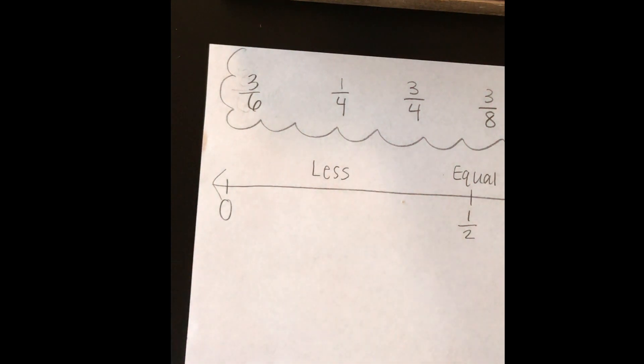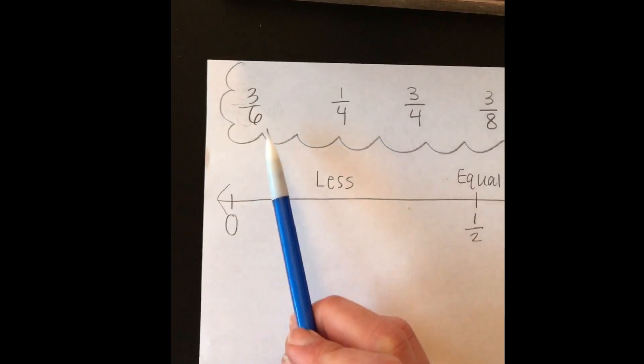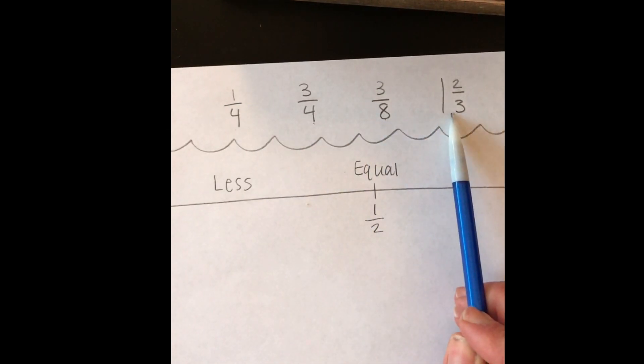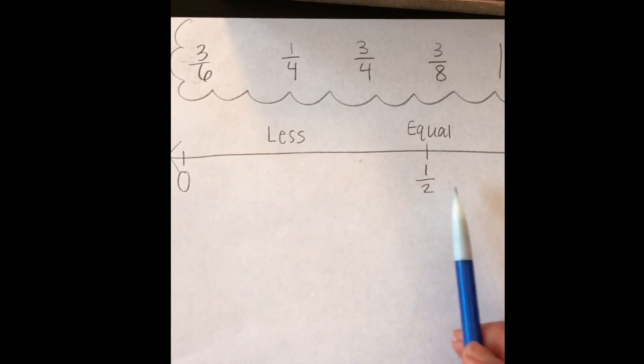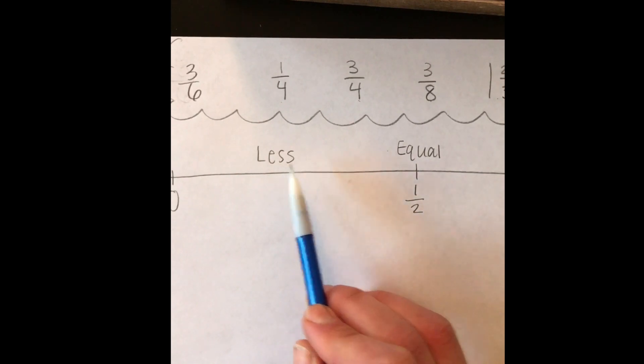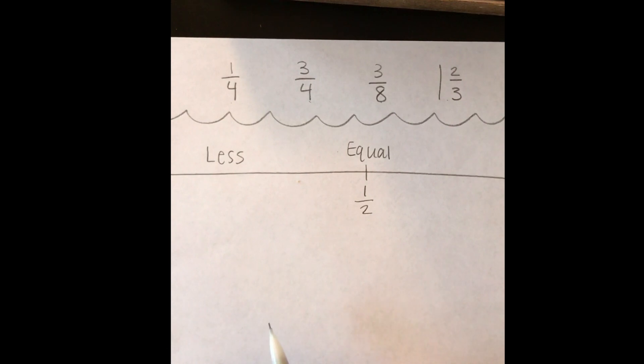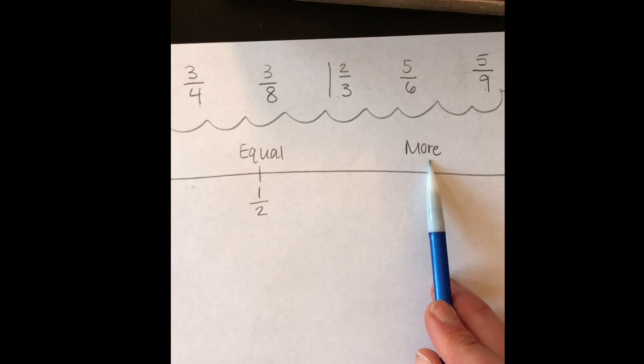Today we will be practicing ordering a set of fractions from least to greatest using a number line and using half as a benchmark. So we have the following fractions: 3 sixths, 1 fourths, 3 fourths, 3 eighths, 1 and 2 thirds, 5 sixths, and 5 ninths. On our number line we have 0, 1 half, and 1. The reason I wrote less, equal, and more is because the first thing we want to do is sort our fractions using 1 half. They can be less than 1 half, equal to 1 half, or more or greater than 1 half.